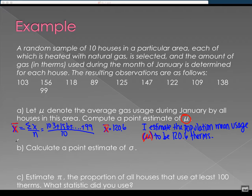Okay. Okay. B. Calculate a point estimate of sigma. What is sigma? Standard deviation. Standard deviation. So population standard deviation. So what do you think we're going to use to estimate that?